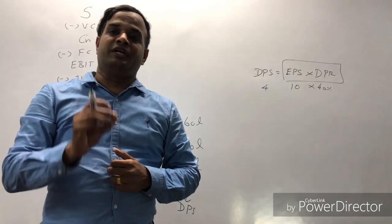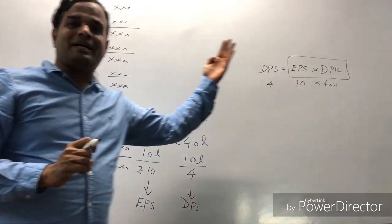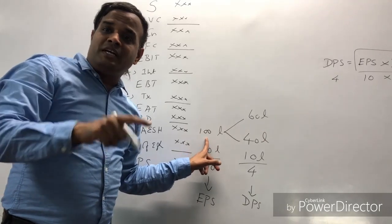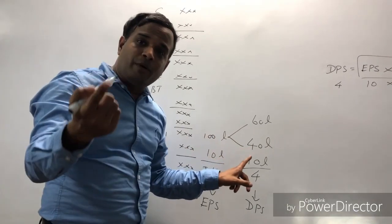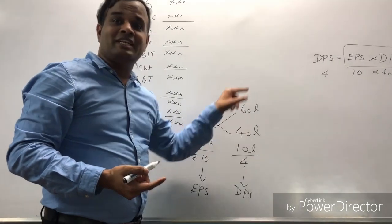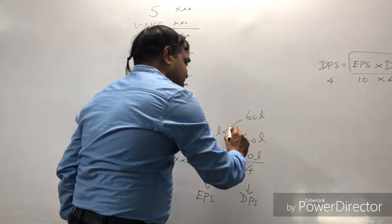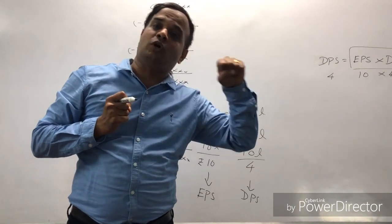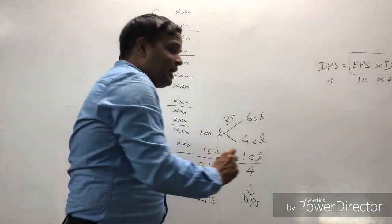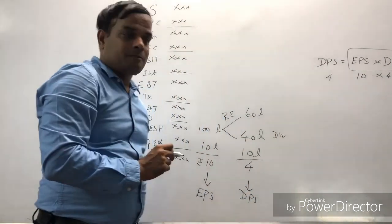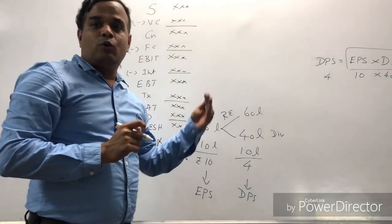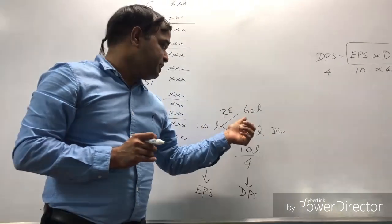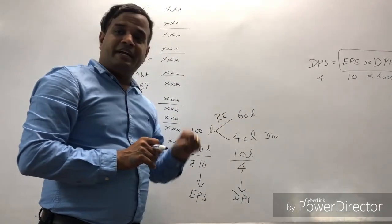Now you understand what EPS and DPS are. As shareholders, the company has 100 lakhs profit, but it is ready to pay only 40 lakhs as dividend. The remaining 60 lakhs is retained — that is why it is called retained earnings. Whatever is earned, the company retains a portion. The 40% paid as dividend is the dividend payout ratio, and the 60% retained is the retention ratio.